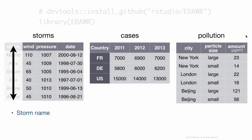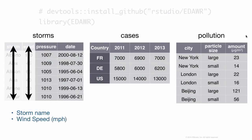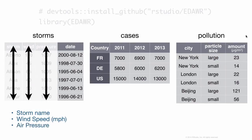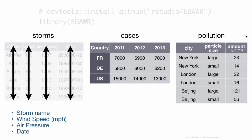The storms data frame is pretty straightforward. We have a variable for the names of each storm, a variable for the maximum wind speed recorded, a variable for the pressure of each storm, and the date on which measurements were made. So there are four variables in that data frame.